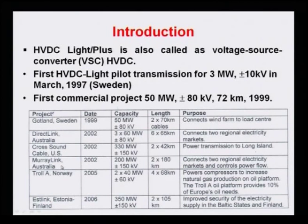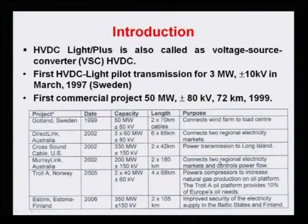In Australia, the Murray Link was commissioned in 2002 with 200 MW at ±150 kV, with a line length of 180 kilometers. This demonstrates that cable-based HVDC transmission can extend beyond 100 kilometers, thanks to improvements in polymer and insulating materials. This link connects two regional electricity markets and controls the power flow between them.